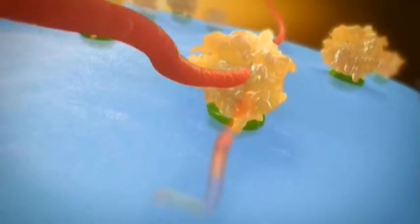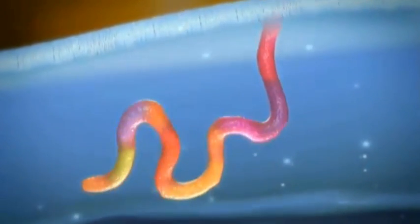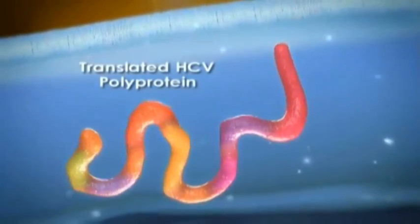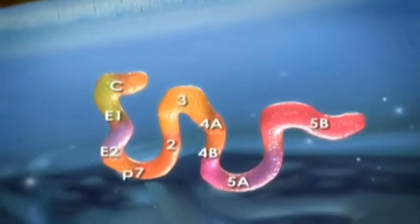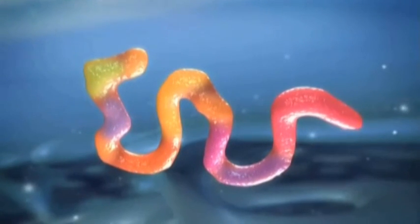These ribosomes then translate the genetic information to produce viral polyproteins over 3000 amino acids long. These polyproteins are made up of three structural and seven non-structural proteins, a total of 10 distinct viral proteins.